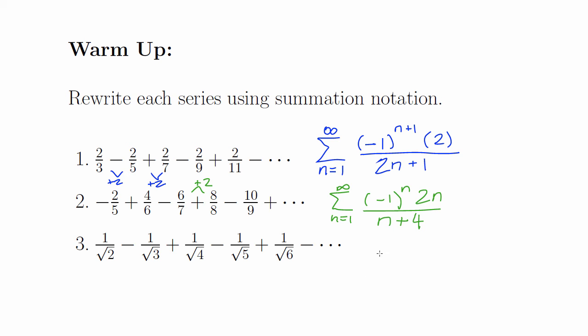Number 3 is also an infinite series. We will sum from n equals 1 to infinity. It is an alternating series with the first term positive, so negative 1 to the power n plus 1. The numerator is always 1 on top.